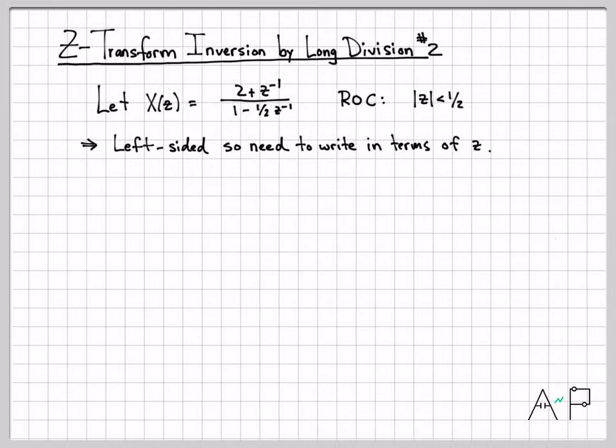So we're going to do the exact same thing. We are actually going to perform long division. I'm going to put 1 minus 1 half z to the negative 1 into 2 plus z to the negative 1. However, when I do that long division up here now, I need to get z to positive powers instead of z to negative powers.